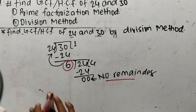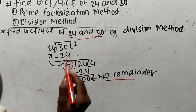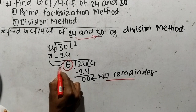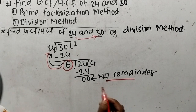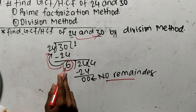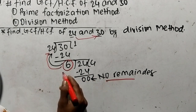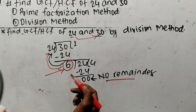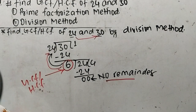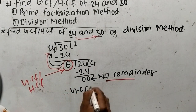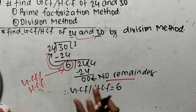To summarize the division method: first, divide the greater number with the lesser number. If a remainder comes, divide the divisor with the remainder, and keep dividing until there is no remainder. Here, we first got remainder 6, then divided divisor 24 by 6 and got remainder 0. Since divisor 6 gives no remainder, it becomes the GCF or HCF. Therefore, GCF or HCF = 6.